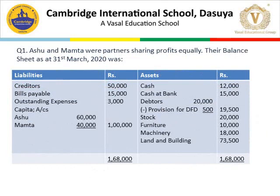To understand it better, let's do a question. Ashu and Mamata were partners sharing profits equally. The balance sheet as at 31st March 2020 shows: on liabilities side — creditors 50,000; bills payable 15,000; outstanding expenses 3,000; capital accounts: Ashu 60,000, Mamata 40,000. Total one lakh sixty-eight thousand. On asset side: cash 12,000; cash at bank 15,000; debtors 20,000 less provision 500 = 19,500; stock 20,000; furniture 10,000; machinery 18,000; land and building 73,500. Total balance sheet one lakh sixty-eight thousand.